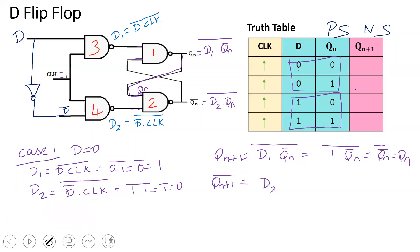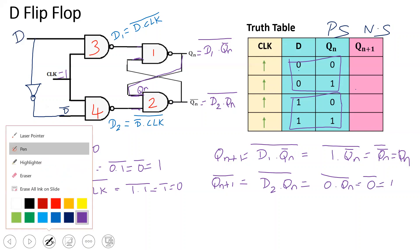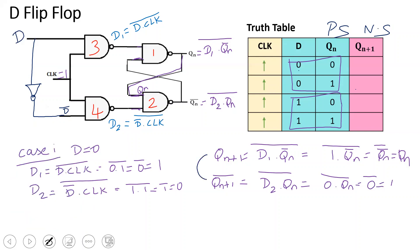Qn+1 bar equals (D2 · Qn) bar. D2 is 0, so 0 into anything is 0, and 0 bar is 1. So Qn+1 bar is 1, which means Qn+1 is 0. When D is equal to 0, the next state becomes 0 irrespective of the present state — the output follows the D input when the clock pulse triggers the flip-flop.